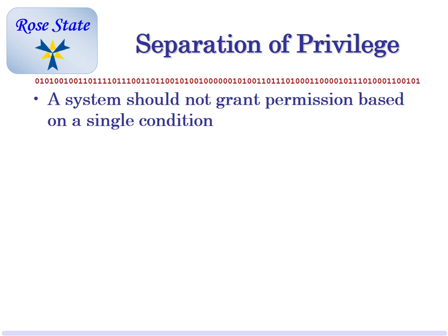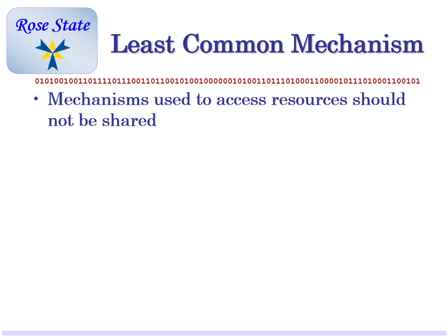Least common mechanisms: mechanisms used to access resources should not be shared. The same mechanism that does one thing should not do something else. The same mechanism that controls the doors should probably not be the one that controls the air conditioner, because if someone has broken the air conditioning system, then they have access to the doors — kind of like Target.